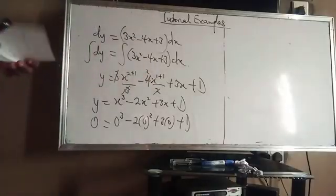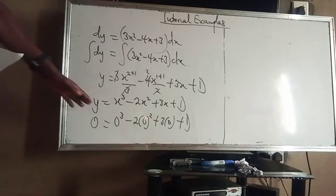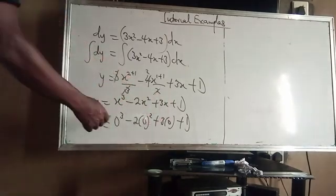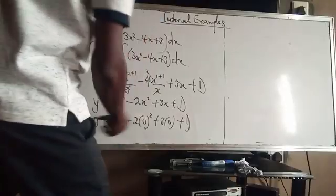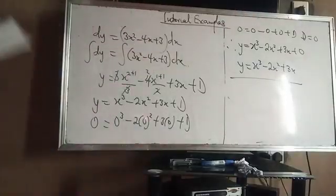In the problem we are told that y = 0 when x = 0. Substituting: 0 = 0³ − 2(0)² + 3(0) + d, which gives 0 = 0 + d, so d = 0. Therefore y = x³ − 2x² + 3x, and that is what we are required to find.